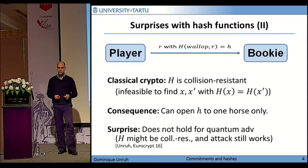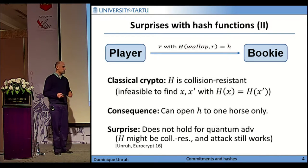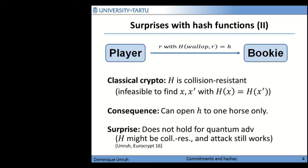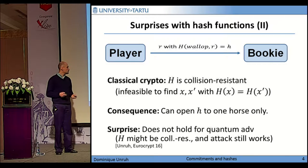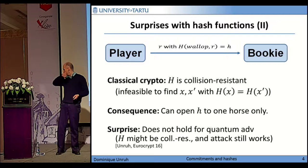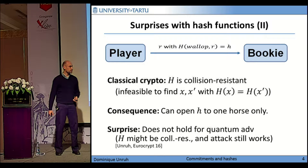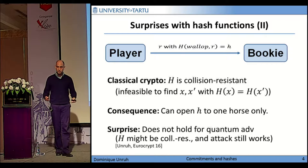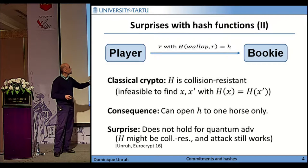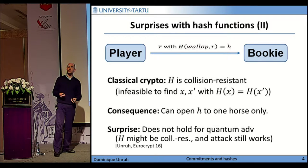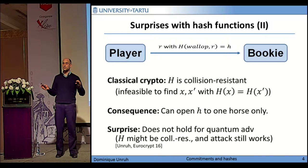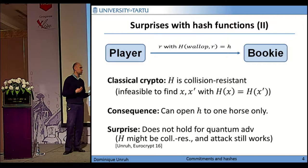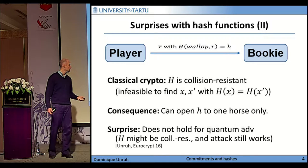And now comes the big surprise. In the quantum setting — so if the adversary potentially has a quantum computer — this reasoning does not hold. So it could be that H is collision-resistant, even collision-resistant against quantum adversaries, but still it is possible that the player unveils to any horse he pleases. At least relative to some rather artificial oracles, such a hash function has been explicitly constructed in prior work.